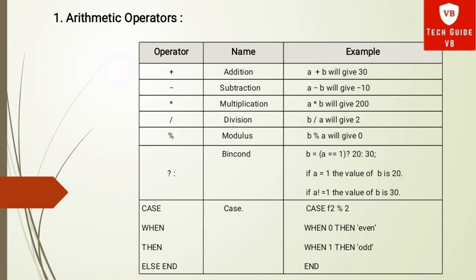The first arithmetic operator is addition, which is used to add the values on either side of the operator. Suppose A = 10 and B = 20, then A + B gives 30. The next arithmetic operator is subtraction, which subtracts the right-hand operand from the left-hand operand. Suppose A = 10 and B = 20, then A - B gives -10.